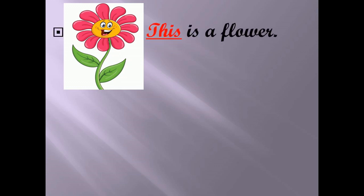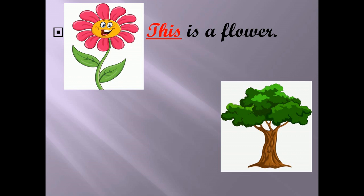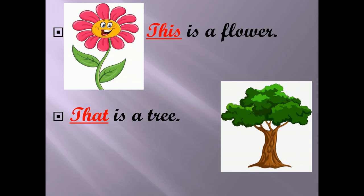What is this? It is a flower, and it is near. So what will we write — 'this' or 'that'? Flower is near, so we write 'this' — 'This is a flower.' Next picture — tree. Tree is far, so what comes for far? The answer is 'that' — 'That is a tree.' OK students, you have to learn and practice this at home. Thank you.